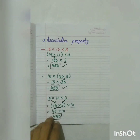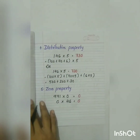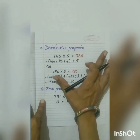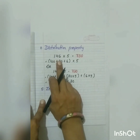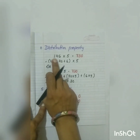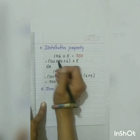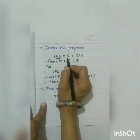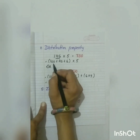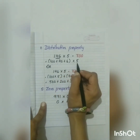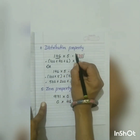This property is called the associative property. Now our fourth property is distributive property. Here we can split the multiplicand according to its place value and then multiply it by the multiplier. For example, 146 multiplied by 5. So we split the multiplicand: 100 plus 40 plus 6, multiplied by 5. The product we get is 730.